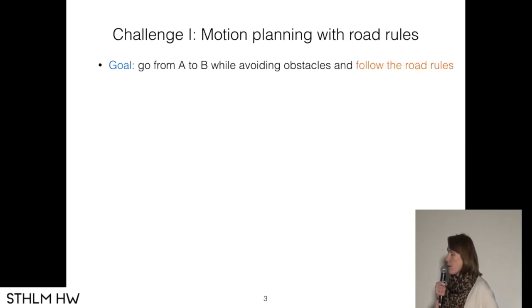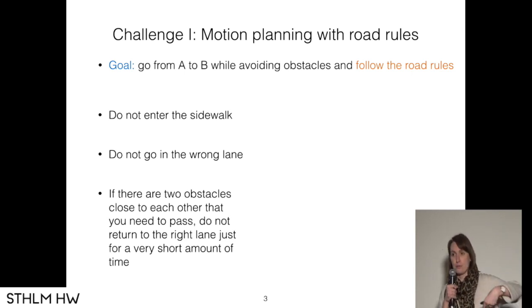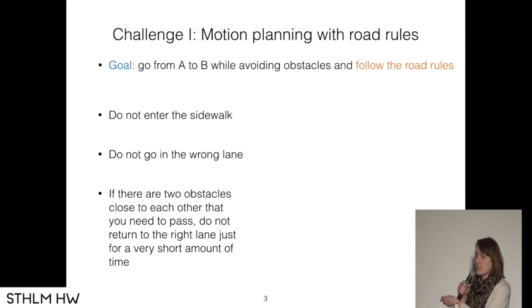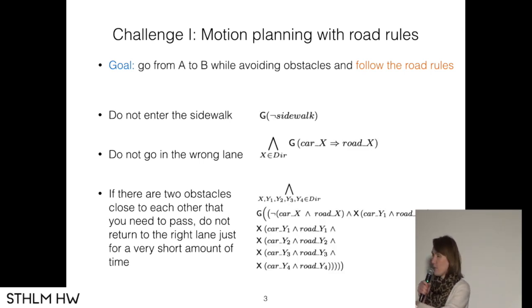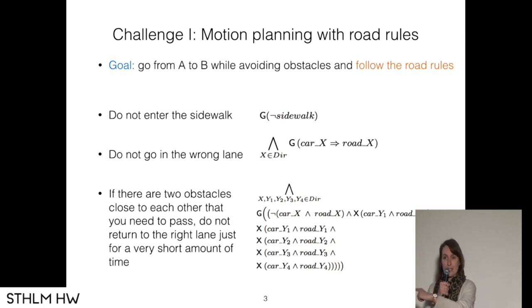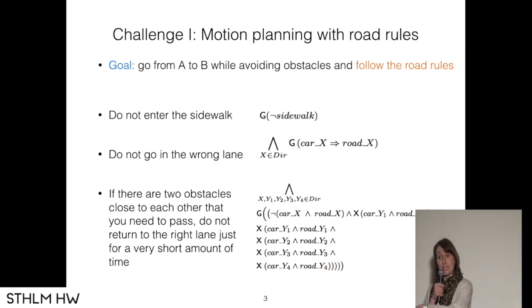In autonomous driving, the problem is that you have a bunch of road rules on top of your go from A to B. Those road rules could be something like: do not enter the sidewalk, do not go in the wrong lane, if there are two obstacles close to each other do not do crazy stuff, do not go back to the right lane and then back to the left lane. There is the Vienna Convention that actually states all of these rules. It turns out we can take these rules and specify them in some kind of logic — rigorously captured. It's a temporal logic, somewhat close to propositional, just with a bunch of other operators. People are working on formalizing the Vienna Convention into this so that we get a complete set of rules.